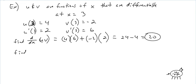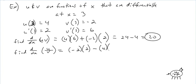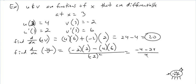Next, find d/dx of u/v. We get the bottom v times the derivative of the top, which is 2, minus the top u which is 4 times the derivative of the bottom which is 6, all over the bottom squared: (−2)². That's −4 − 24 over 4, or −28/4, which is −7. That's your answer.